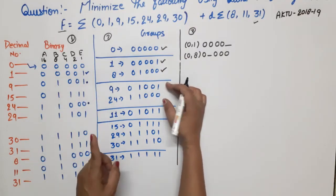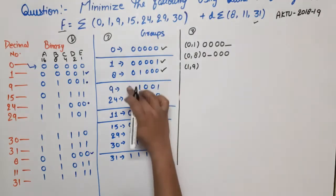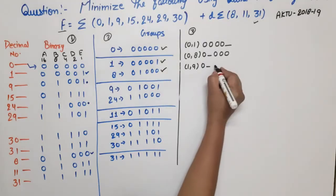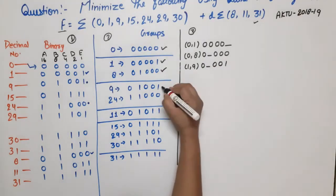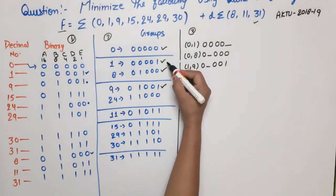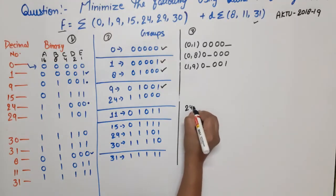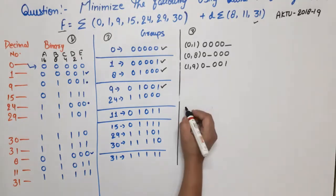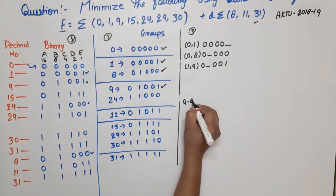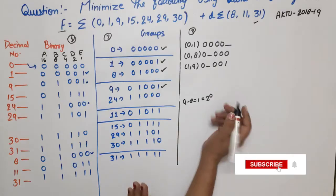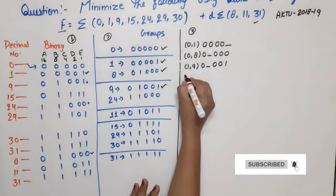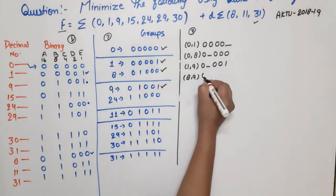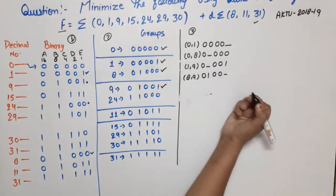Comparing group 2 with group 3: minterms 1 and 9 — difference is 8 = 2^3, possible. Result: 1,9 → 0-001, second bit changes, remaining bits same. Mark 9 as used. Minterms 1 and 24 — difference is 23, not possible. Minterms 8 and 9 — difference is 1 = 2^0, possible. Result: 8,9 → 0100- , last bit changes.